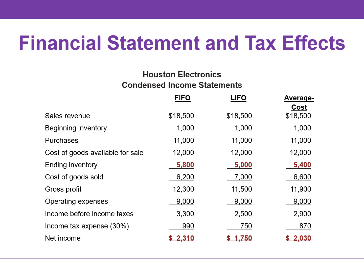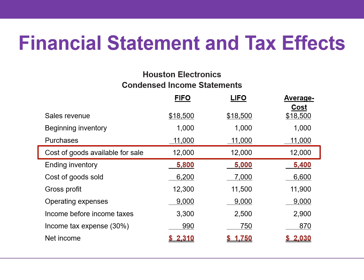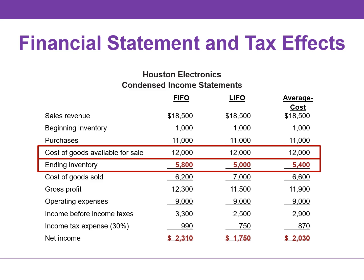The cost of goods available for sale, which is $12,000, is the same under each of the three inventory cost flow methods. The ending inventories and the cost of goods sold are different. This difference is due to the cost flow assumptions that were used to assign cost to both cost of goods sold and to ending inventory.